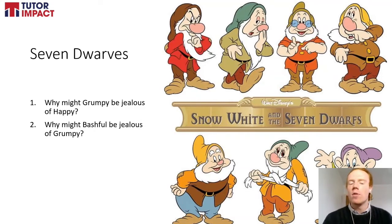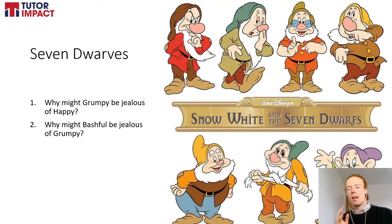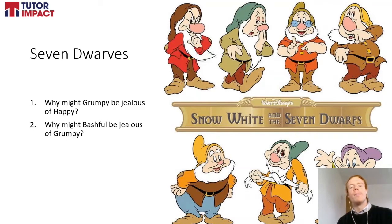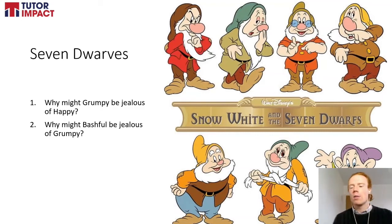Secondly, why might Bashful be jealous of Grumpy? Chances are Grumpy gets angry and snaps at people — he tells them when they're annoying him. But Bashful is very shy and timid and might not always have the courage to say what's on his mind. So Bashful might look at Grumpy and think, 'I wish I was brave enough to say what I'm really thinking.'